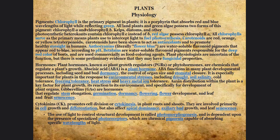Cytokinins, as the word can probably give you a clue, promote cell division, which is so important — that you have an efficient cell division with an equal amount of DNA, cytoplasm, organelles, and all of that for two perfectly functioning cells. They will then multiply into many more to replenish old ones or repair others. They are involved in cell growth, differentiation, but also apical dominance, axillary bud growth, and leaf senescence.